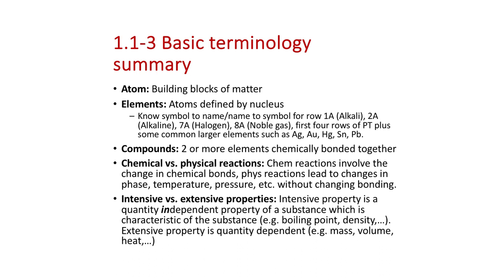You get a periodic table on every exam, but the problem is it usually doesn't give element names, only symbols. So we want to make sure that if I say potassium, you know to look for element 19, K. You should know name-to-symbol and symbol-to-name for: the first group — hydrogen, lithium, sodium, potassium, rubidium, cesium. The francium row is all radioactive, but cesium chloride is a common compound you may see.